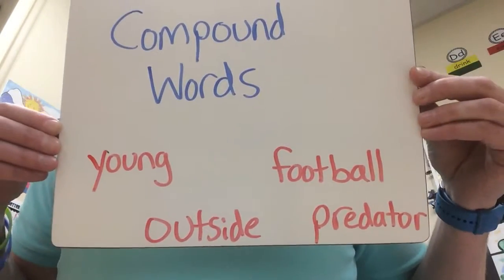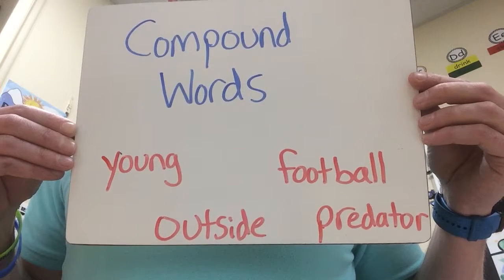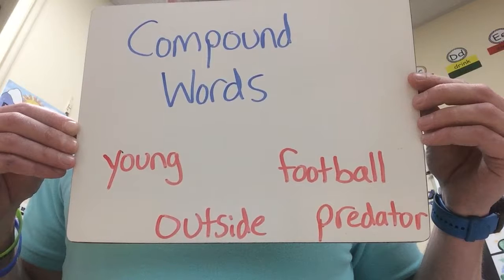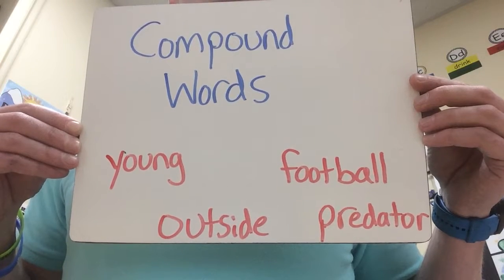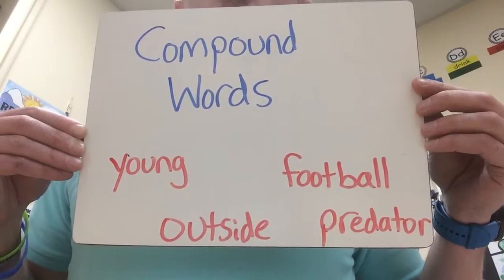Can you pick which two? I have young, football, outside, predator. Which of those two words are made up of two smaller words?